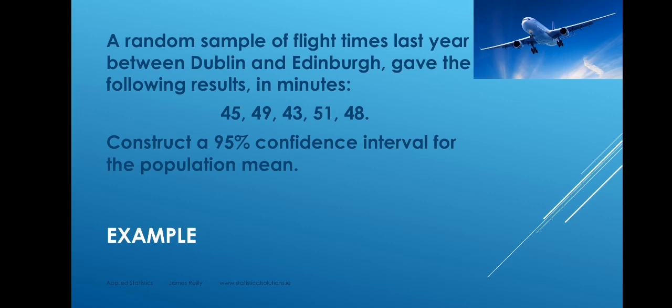This example says: a random sample of flight times last year between Dublin and Edinburgh gave the following results in minutes. We're interested to know what was the mean flight time between Dublin and Edinburgh last year. So we take a random sample — a sample of five flight times — and we construct a 95% confidence interval for the population mean. From the sample, we will calculate x bar, s, and n, which is 5, then look up the t-tables.